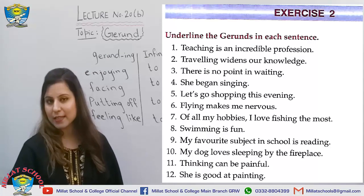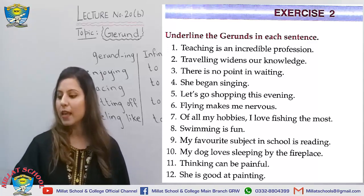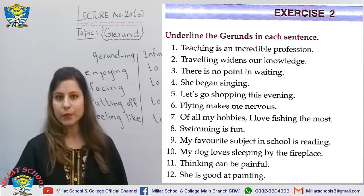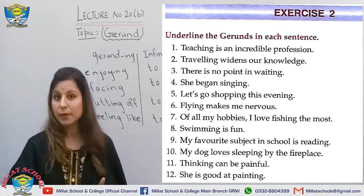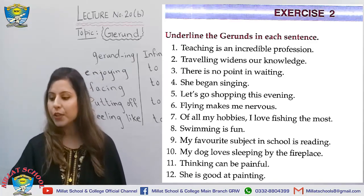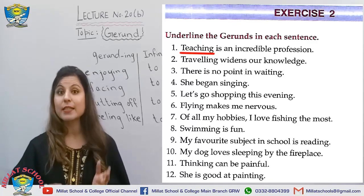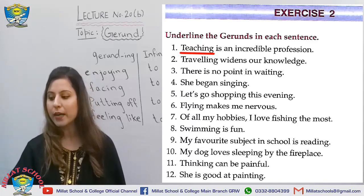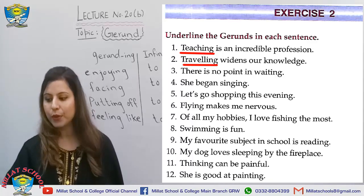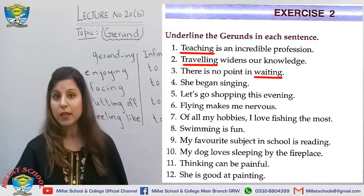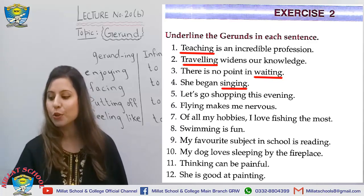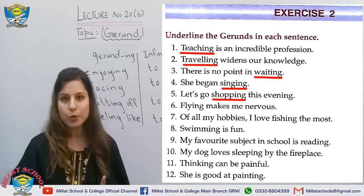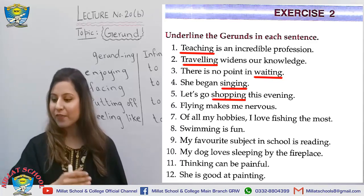Exercise 2 on page 107: underline the gerunds in each sentence. Find the -ing words, but be careful to distinguish verbs from nouns. Number one: 'Teaching is an incredible profession' — teaching is the subject, so it's your gerund. Number two: 'Travelling widens our knowledge' — travelling. Number three: 'There is no point in waiting' — waiting is an object, so it's a gerund. Number four: 'She began singing' — begin is the verb, singing is your gerund. Number five: 'Let's go shopping this evening' — go is your verb and shopping is your gerund.